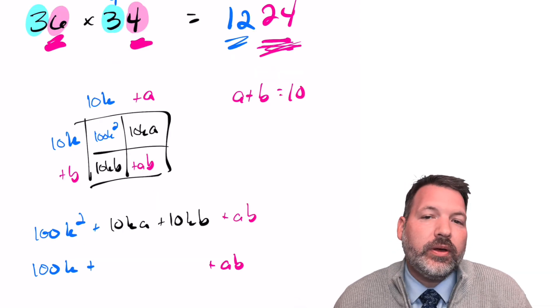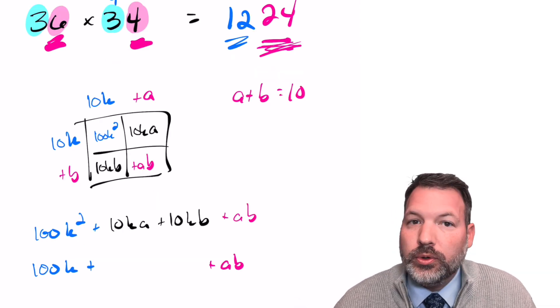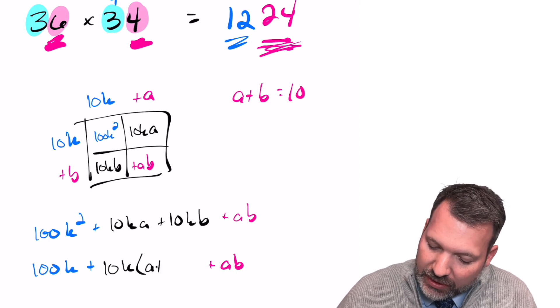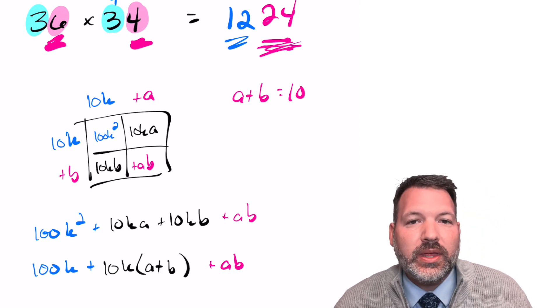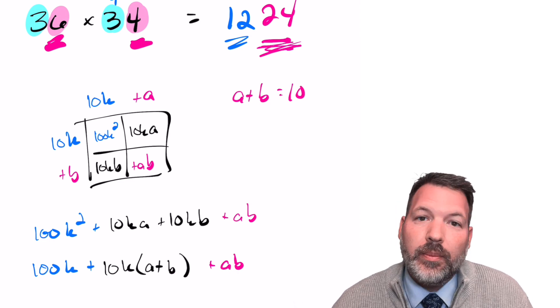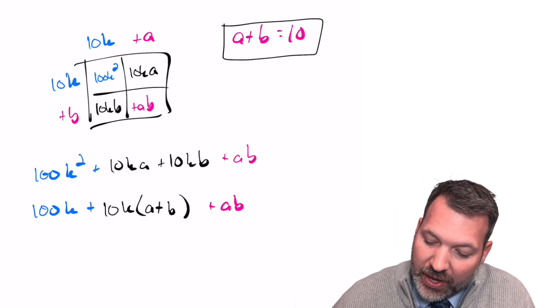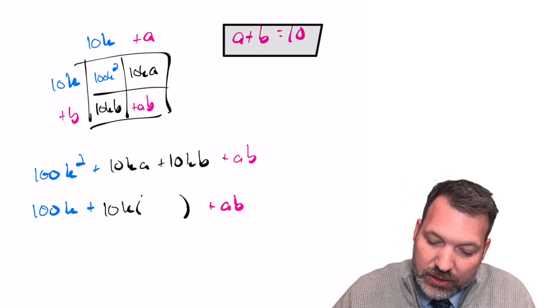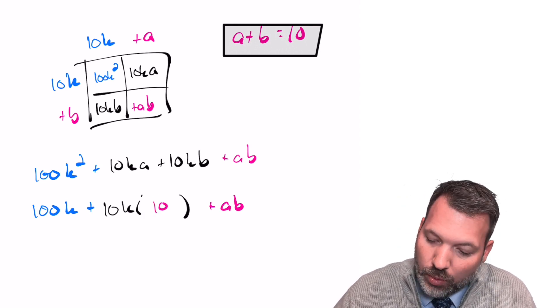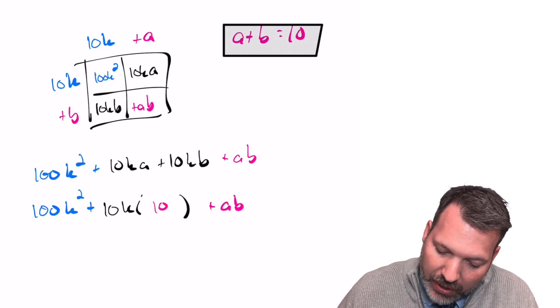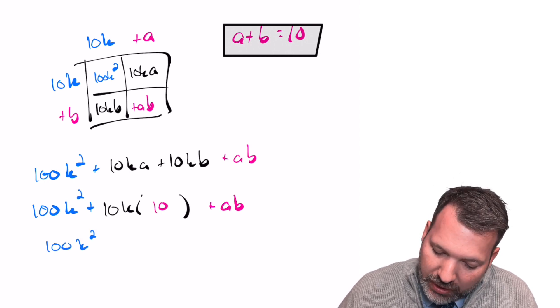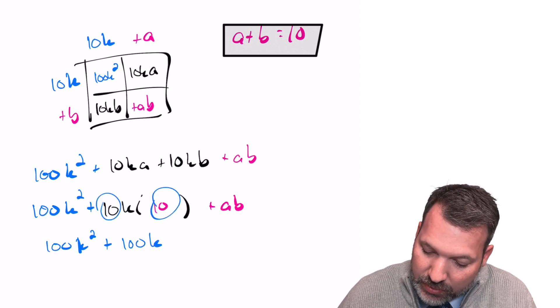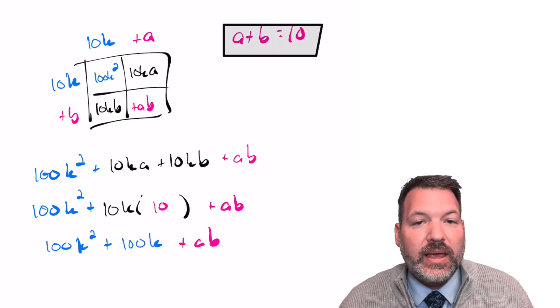At this point, we can now illustrate another useful tool, factoring. And we can say, well, this 10ka plus 10kb is actually the same thing as 10k times the sum a plus b. And we happen to know what that sum is. a plus b has to equal 10. So we can replace this a plus b with 10. And then one more time, rewrite this 100k squared plus 100k, that's 10 times 10 times k plus ab.